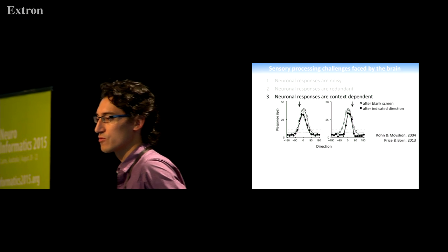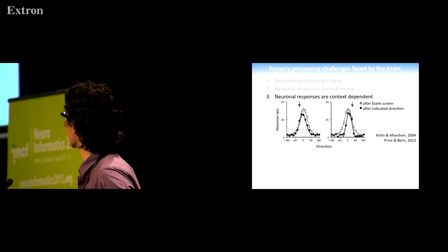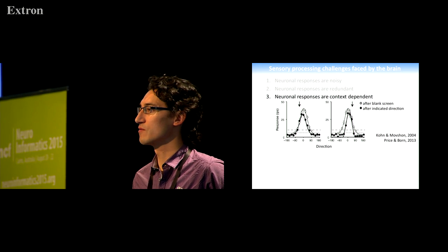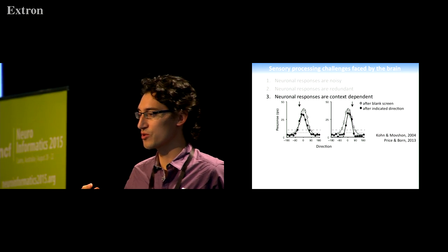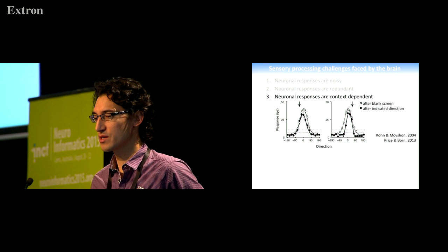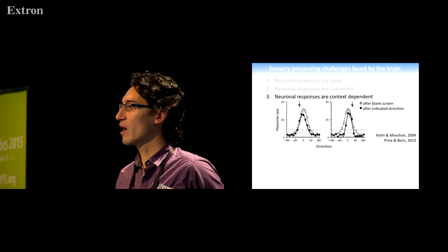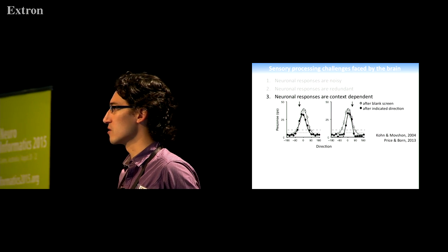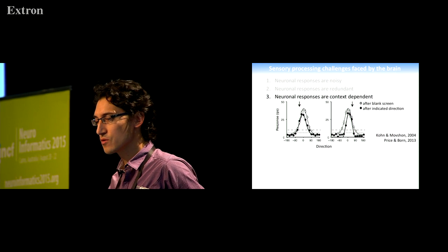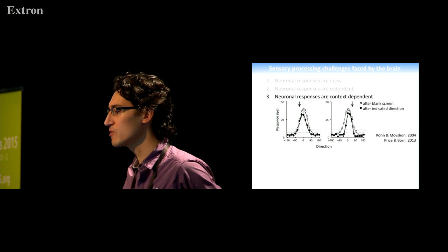The final thing I'm particularly interested in is that neuronal responses are context dependent. I'm showing that here in two ways. This is the direction tuning curve of a single neuron after exposure to either a blank screen or after exposure to the context of the direction indicated by the arrow. You can see that prior exposure to motion in this case reduces the gain of the neurons, so they're less responsive, but it also shifts the tuning curves.